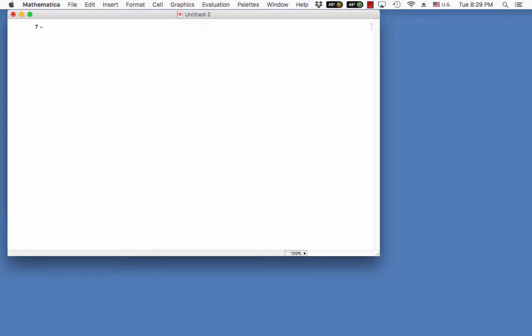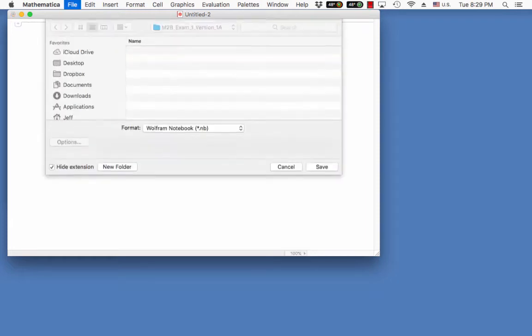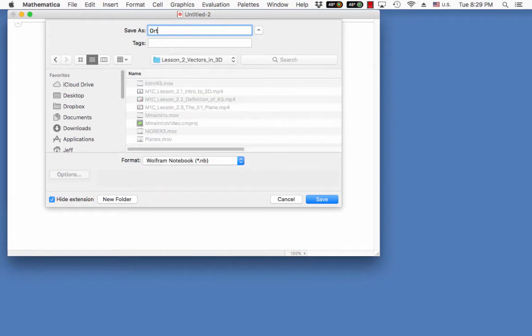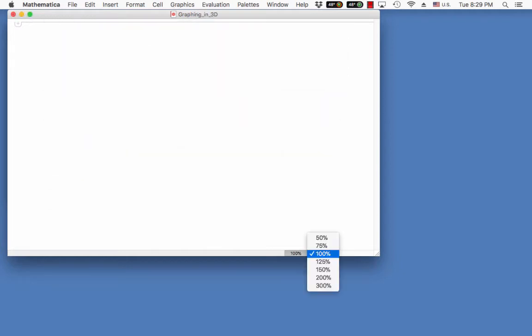So I can type into this. I can write seven plus three and I can go up into evaluate cells and this will now say, okay, for input seven plus three I get this. This is called an input cell and an output cell and these are called cell brackets. I don't really want you to worry too much about this other than just to have a sense of how this works. I'm going to go ahead and save my file to an appropriate folder and I'm going to call this graphing in 3D. And this is a notebook. It's automatically saved as a notebook through Mathematica. I can also zoom in and out. Perhaps I want to be 125%.